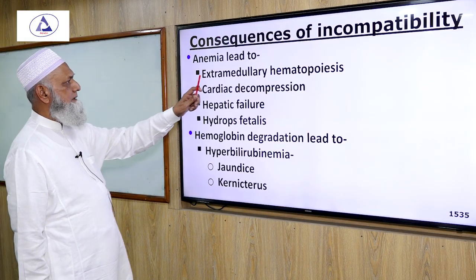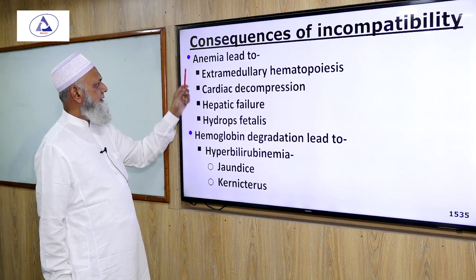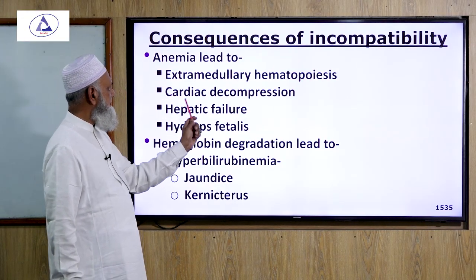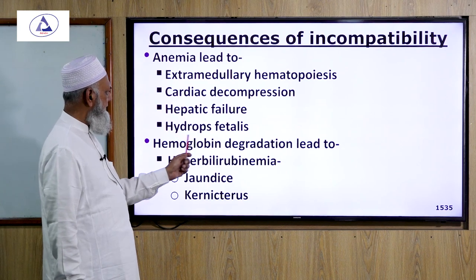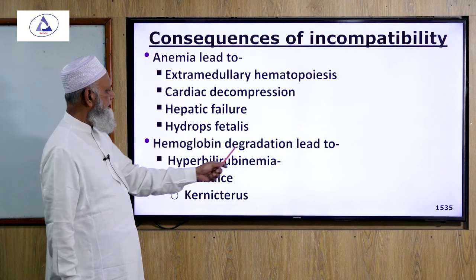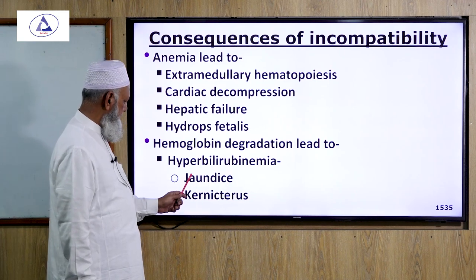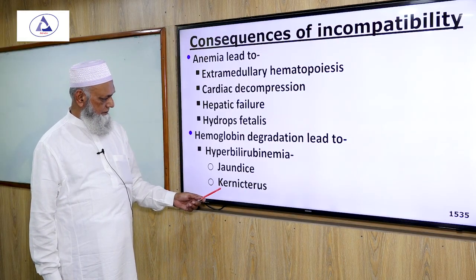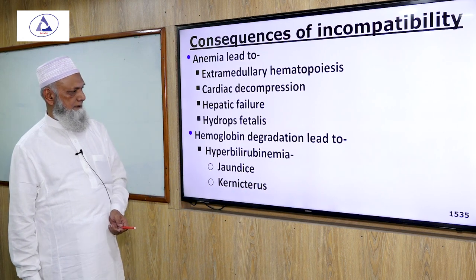The consequences of incompatibility include: anemia leading to extramedullary hematopoiesis, cardiac decompression, hepatic failure, and hydrops fetalis. Hemoglobin degradation leads to hyperbilirubinemia, which in turn leads to jaundice and kernicterus.